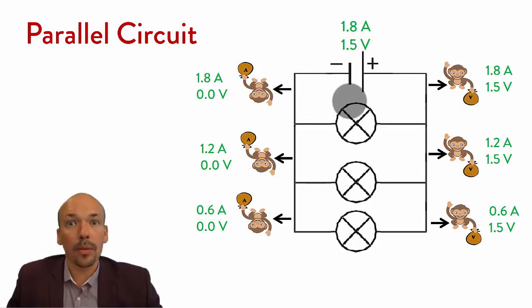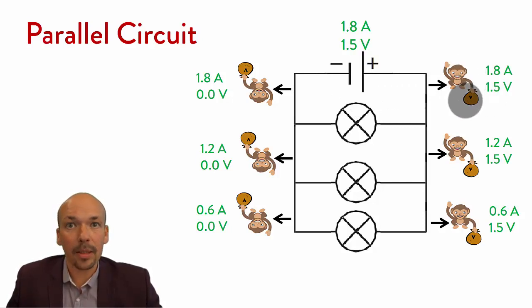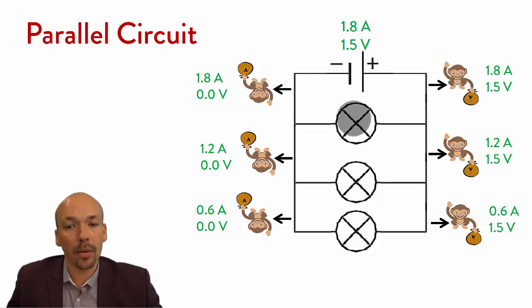It's very important to remember that the amperes split, but what's in their bag — the voltage — doesn't split. The voltage only goes lower when the amperes go through an electrical component.